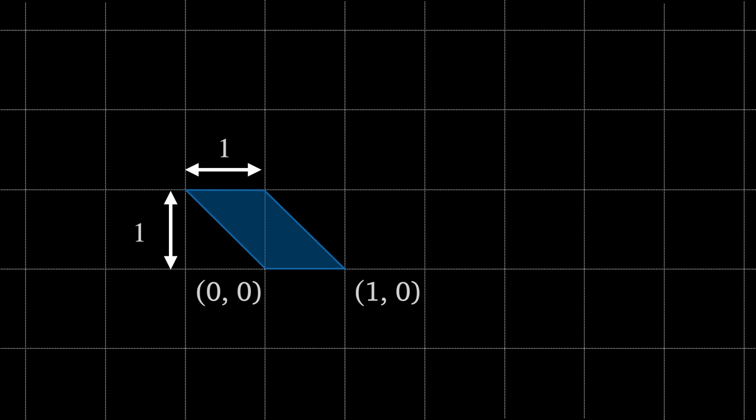We'll use proof by contradiction and show that if the height is greater than 1, our parallelogram can't be primitive. Hence since we know it is primitive, the height must not be greater than 1.